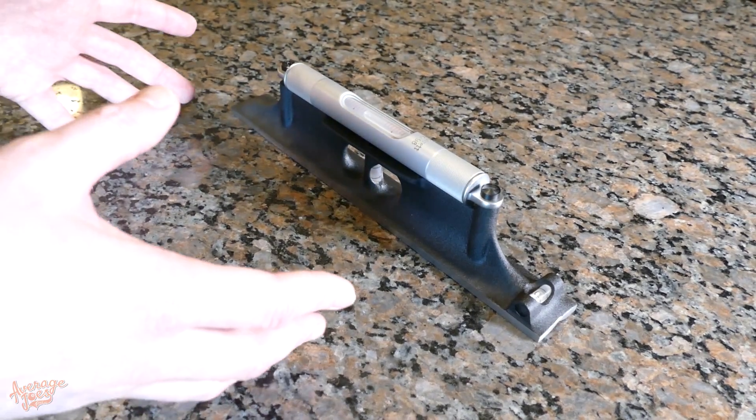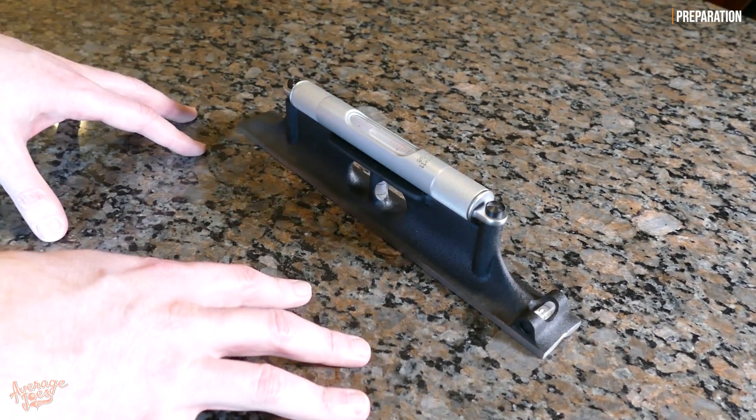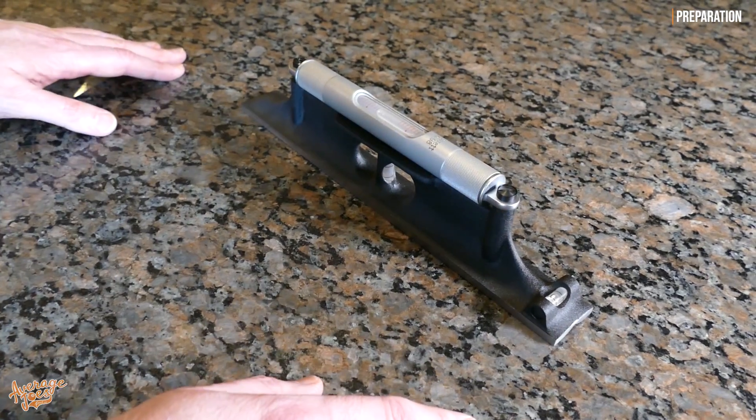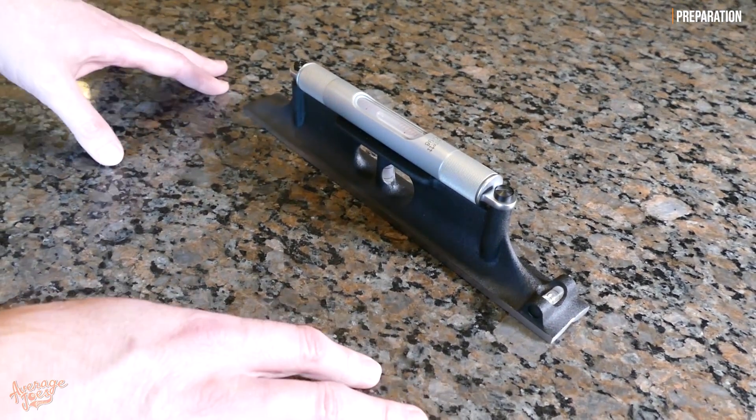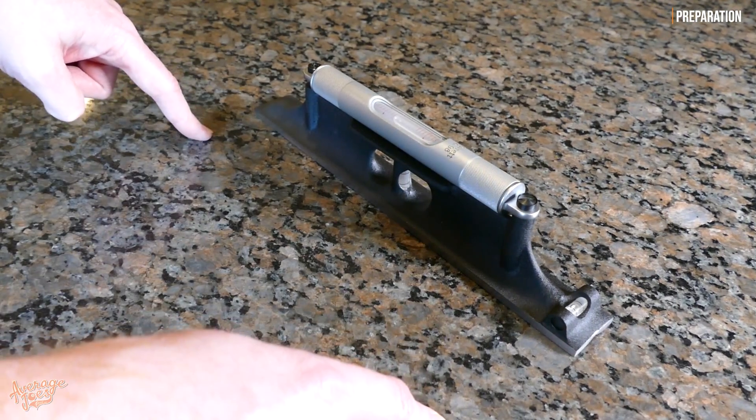First thing you want to do is make sure you find a nice flat surface. Here we have a machined granite kitchen worktop. Now what you're calibrating from does not need to be perfectly level. However, it is important that it's a nice flat surface.